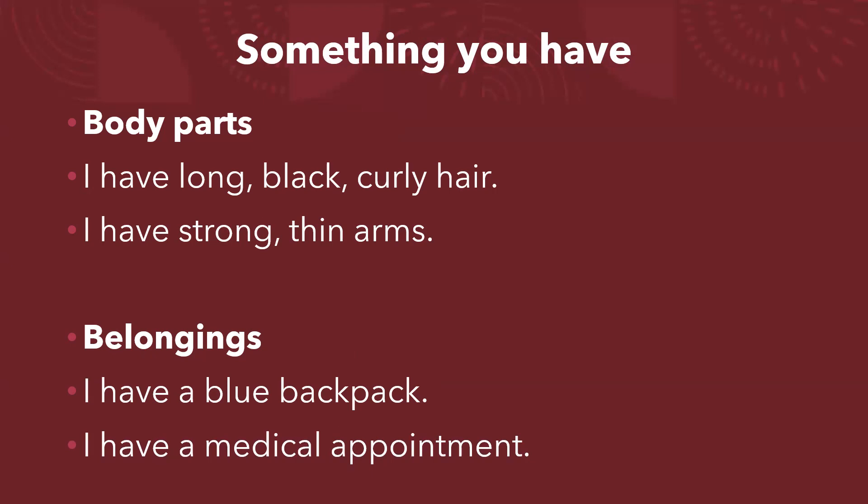También podemos hablar de pertenencias al hablar del verbo have. Ejemplo: yo tengo una mochila azul, yo tengo una cita médica. Entonces, sabemos que cuando hablemos de partes del cuerpo, tendremos que utilizar el verbo tener, porque es el verbo apropiado tanto en español como en inglés. Ahora bien, viene el vocabulario.